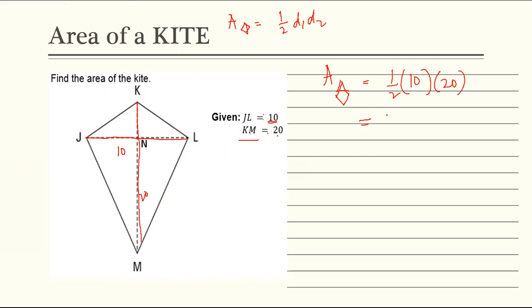10 times 20, so magiging one-half of 200. Multiply 10 by 20, and then 200 times one-half, parang nadidivide ka lang yan sa two. So magiging one-hundred. So area ng kite ay 100 square units. So kailangan ng units. Kung wala kayo nakitang unit na specific, square units yung ilalagay para makita natin na area po siya. Ganun lang kasimple ang area ng kite.